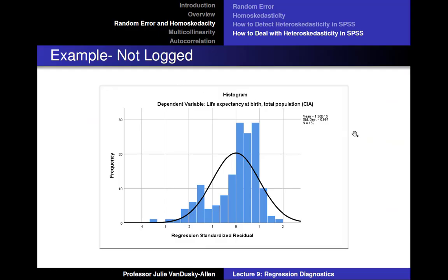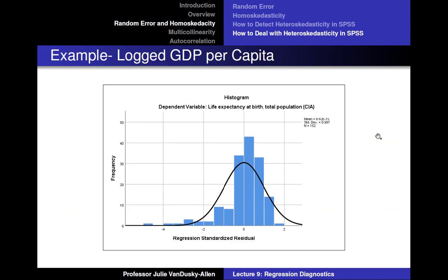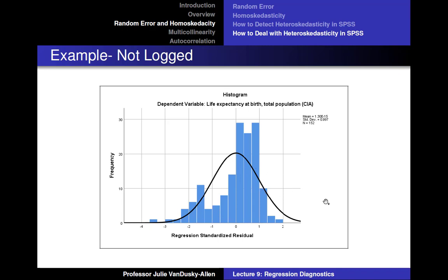I ran the regression with life expectancy at birth as the dependent variable and log GDP per capita as the independent variable. Here are the standardized errors of that regression — as you can see, the standardized errors are closer to being normally distributed around 0. Although it is clear that they are not perfectly normally distributed, they are closer than the errors were in the previous model.